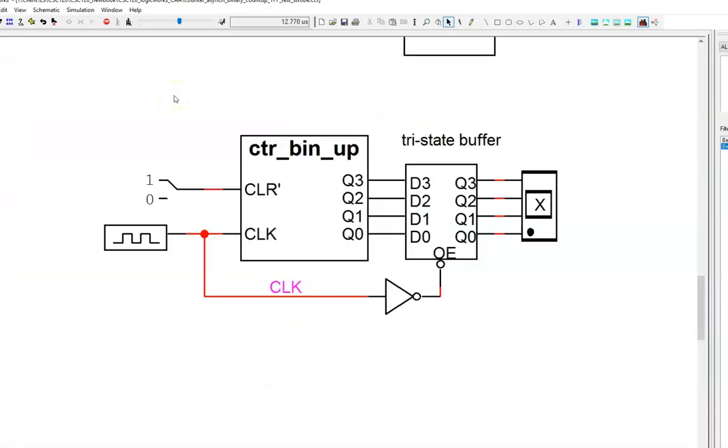So, how can we manage glitches? One simple approach is called strobing, and you can see it implemented here. Look at this output display. It follows the correct count, 0, 1, 2, 3, and so on, with no incorrect numbers in between.